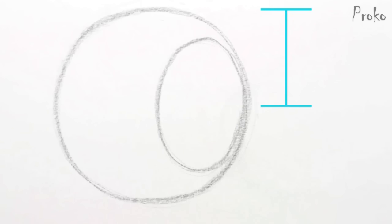So I'll usually look at the area from the center of the circle to the top and divide that into thirds. And the top third will be where the oval begins. And the same for the bottom.